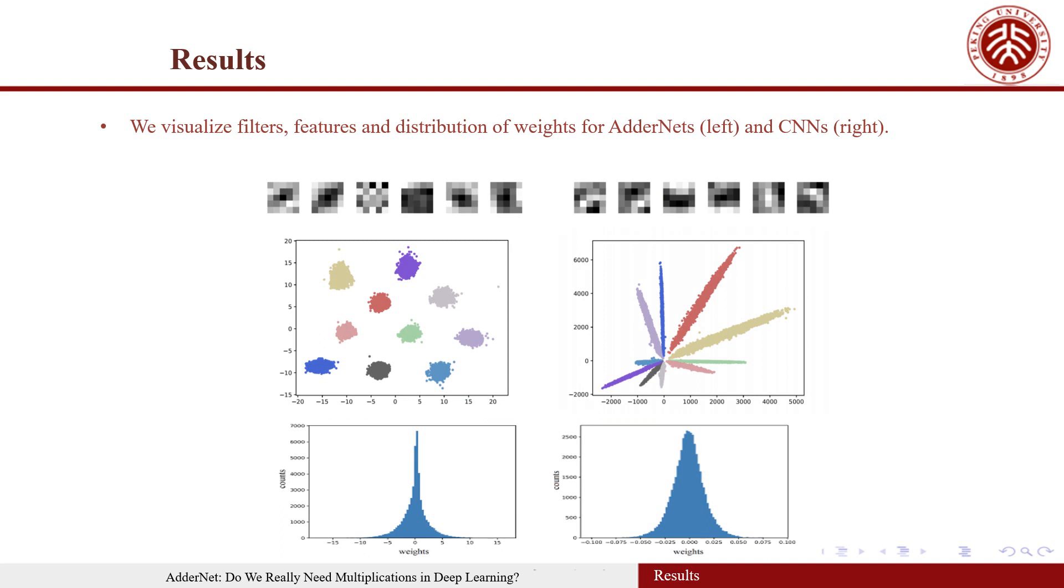Moreover, we visualize filters, features, and distribution of weights for AdderNets and CNNs. Although the AdderNets and CNNs utilize different distance metrics, filters of the proposed AdderNets still share some similar patterns with convolutional filters.